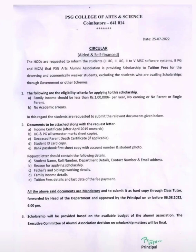You can see the tuition fees. You can see the fees — that's why they pay them to the students. This is the eligibility criteria for applying to the scholarship: family income less than 1 lakh, no parents or single parents are okay, no academic arrears. This is the second unit.